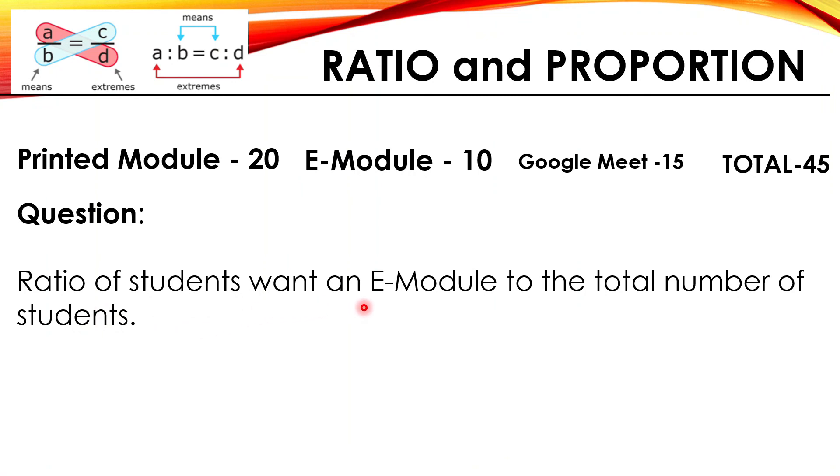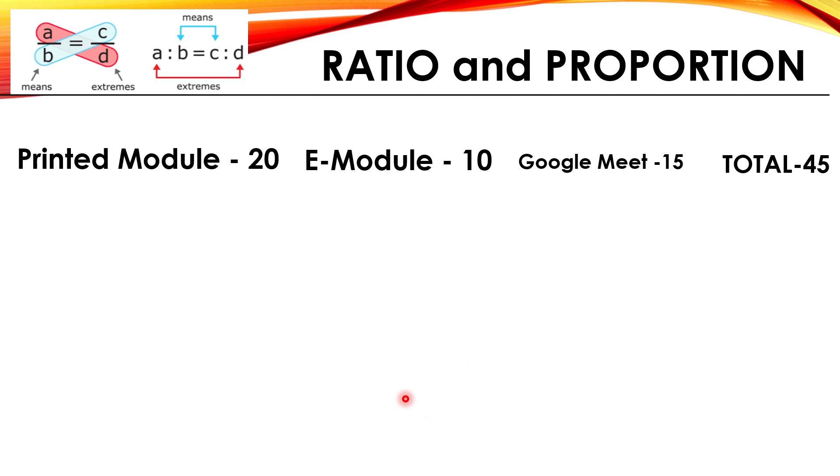Ratio of students want an e-module to the total number of students. We have the e-module, that is 10 is to total 45. Simplify: that is 2 is to 9, divided by 5 on both sides.